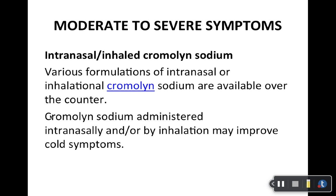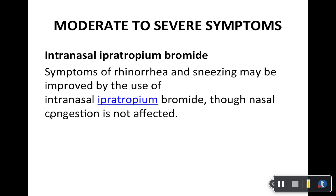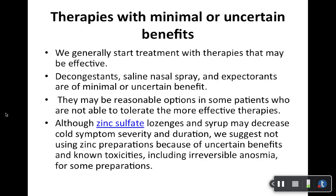Cromolyn is a mast cell stabilizer that can help improve cold symptoms — it helps with runny nose, watery eyes, and similar symptoms. That may be a strategy to use on an as-needed basis. You can also use an anticholinergic intranasal spray — ipratropium — which can help with runny nose and sneezing. Being an intranasal medication, you have limited systemic exposure, so you don't need to be as concerned about anticholinergic adverse effects, though they're still possible.